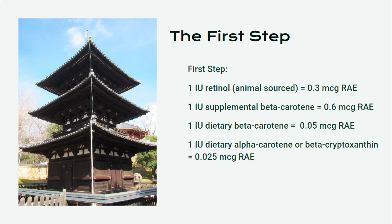The NIH — National Institute of Health — supplies the following conversion rates. There are two steps in the conversion process. During the first step: 1 IU of retinol from animal sources equals 0.3 micrograms RAE; 1 IU of supplemental beta-carotene equals 0.6 micrograms RAE; 1 IU of dietary beta-carotene equals 0.05 micrograms RAE; and 1 IU of dietary alpha-carotene or beta-cryptoxanthin equals 0.025 micrograms RAE.